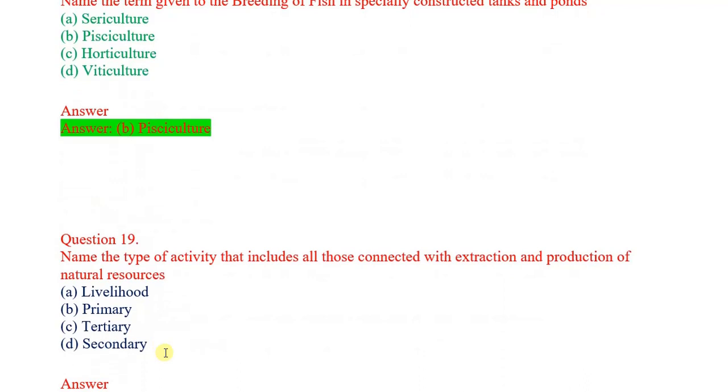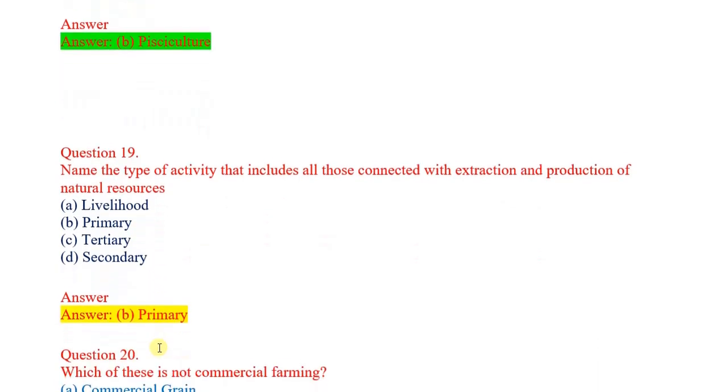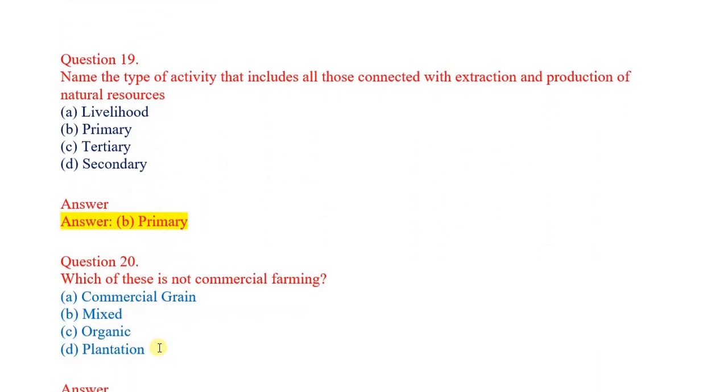Question number 19: Name the type of activity that includes all those connected with extraction and production of natural resources. Options: livelihood, primary, tertiary, secondary. Correct answer: primary.